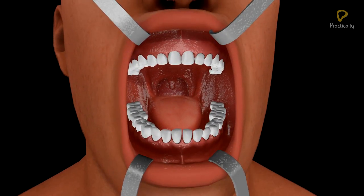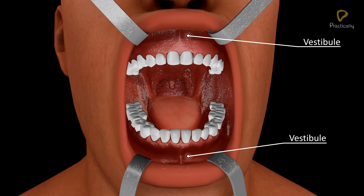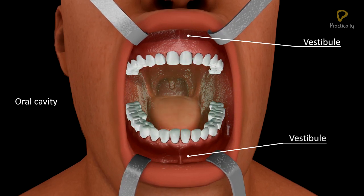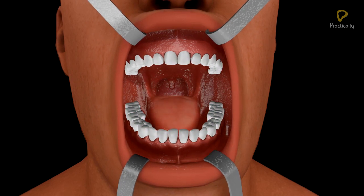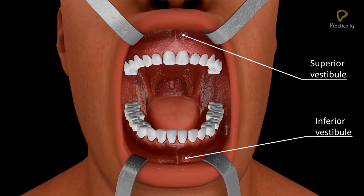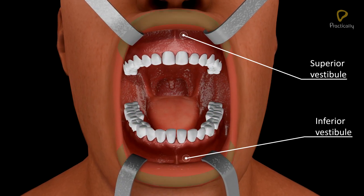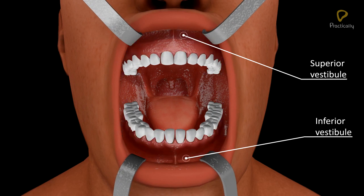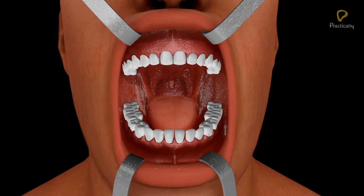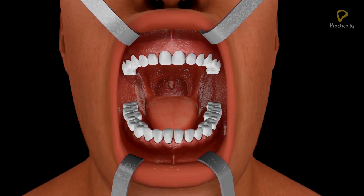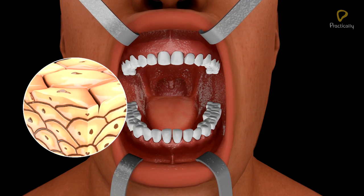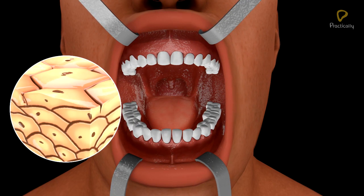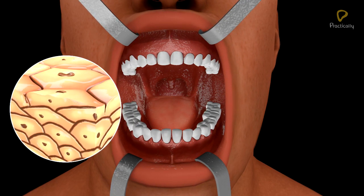Mouth leads into the buccal cavity. The buccal cavity consists of the vestibule and the oral cavity, or buccal cavity proper. The vestibule is the space between the lips, gums, and cheeks.